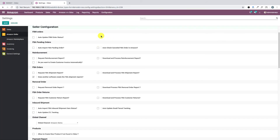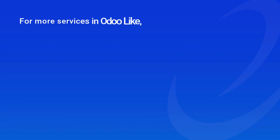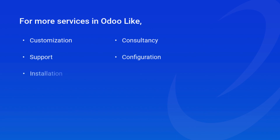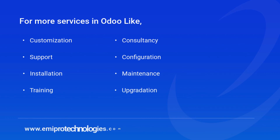In summary, we have seen how to import FBA orders from Amazon by making a request, covering both the automated and the manual methods. Thank you very much for watching the video — we hope it was useful. Emeplow specializes in customization, consultancy, and support. For any other services, feel free to contact us at www.meplow-technologies.com.